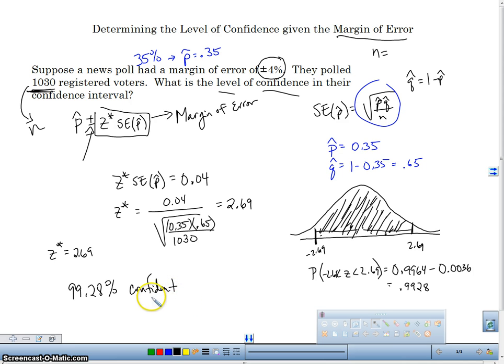Confident. So in order to find our level of confidence, given our margin of error, we're going to take our margin of error part. We're going to set it equal to whatever our margin error is. And then we're going to solve for z star.